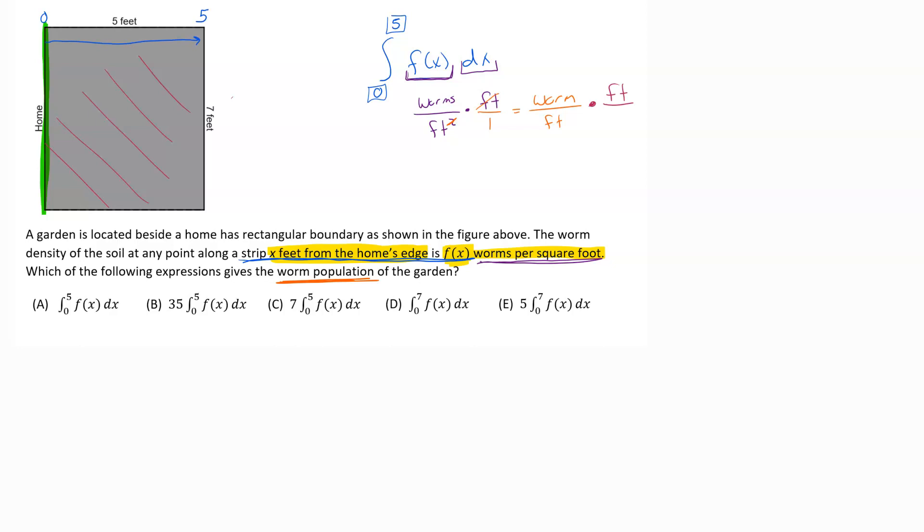To get that area, we would need to multiply by the rest of our little rectangle here. So we would want to multiply this by seven. If I multiply by seven, those units on seven are feet, giving me the feet that I needed here to finish this problem. Feet cancel with feet, and I'm left with just worms as my final conclusion.